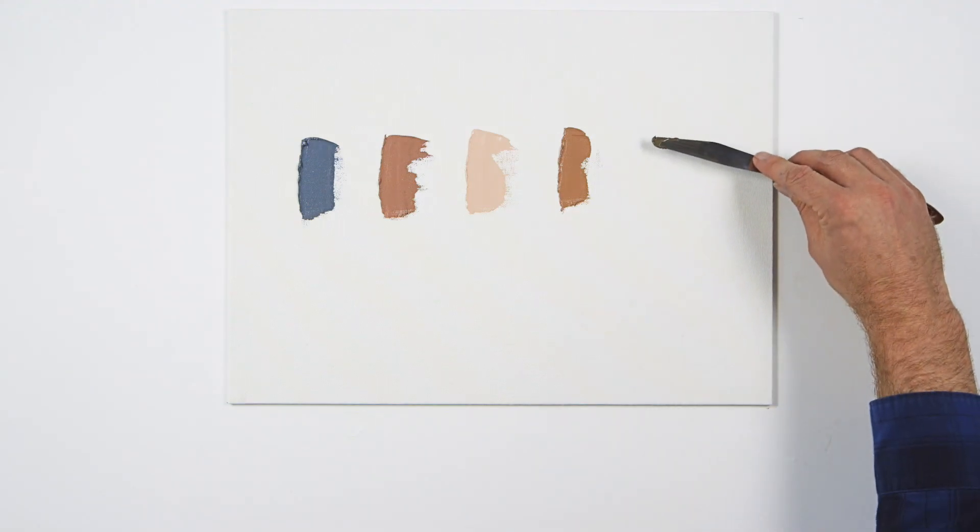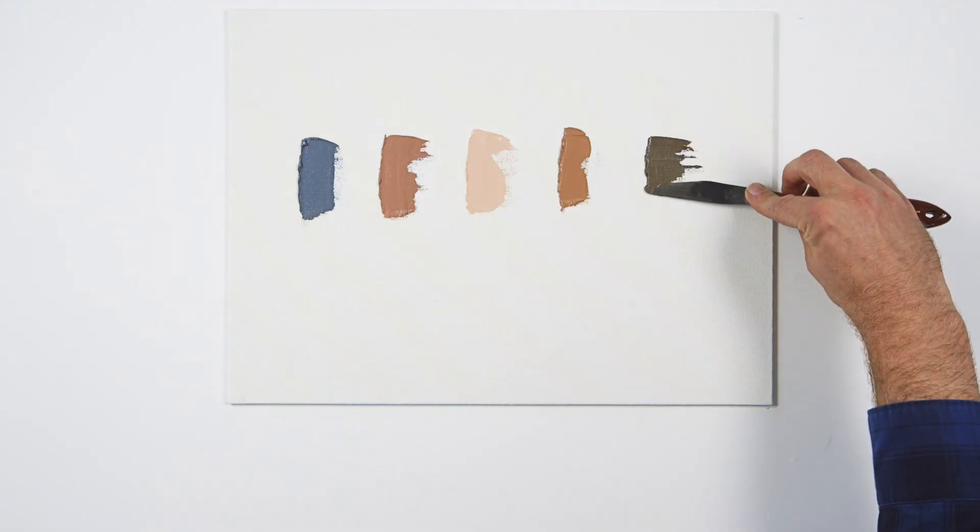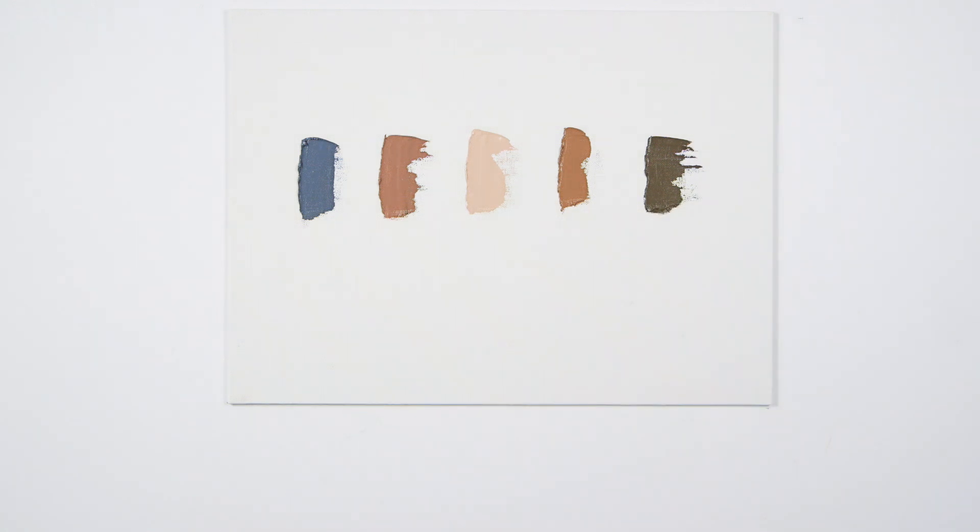A more modern way of creating sfumato is to work with opaque color and do the mixing on a palette. Here are some mixtures derived from a restricted palette for flesh, using Yellow Ochre Pale, Venetian Red, Raw Umber, Ultramarine and Titanium White.